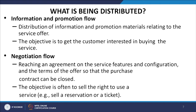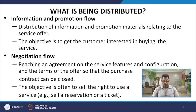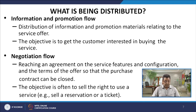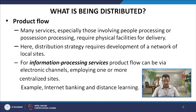What is being distributed? The first is the information and promotion flow — distribution of information and promotion material relating to the service offer. The objective is to get the customer interested in buying the service. The second is the flow of negotiations — reaching an agreement on the service features, configurations, and terms of the offer so that the purchase contract can be closed. The objective is often to sell the right to use a service — that is, sell a reservation or a ticket. The third is the product flow. Many services, especially those involving people processing or possession processing, require physical facilities for delivery. Here, distribution strategy requires development of a network of local sites. For information processing services, product flow can be via electronic channels employing one or more centralized sites, for example, internet banking and distance learning.